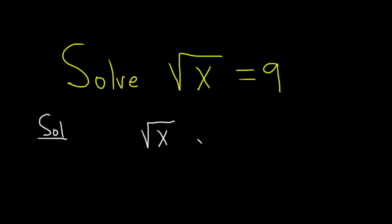So I'll start by writing down the original equation again. The square root of x equals 9. And then now we'll square both sides. So you square the left-hand side, and you square the right-hand side.